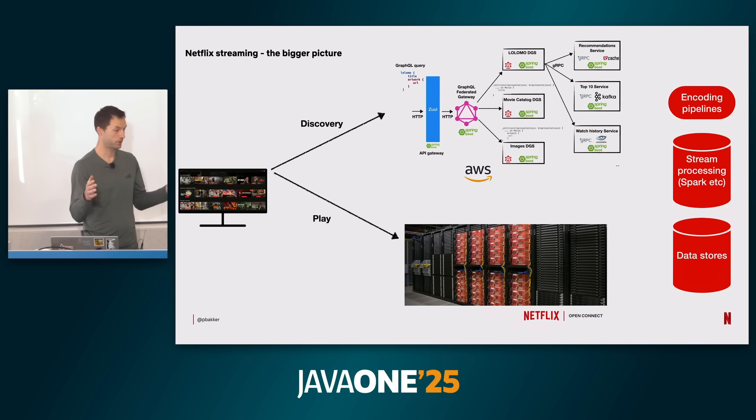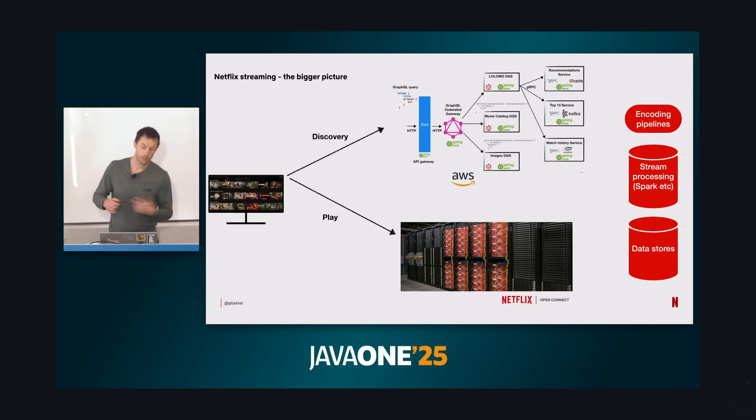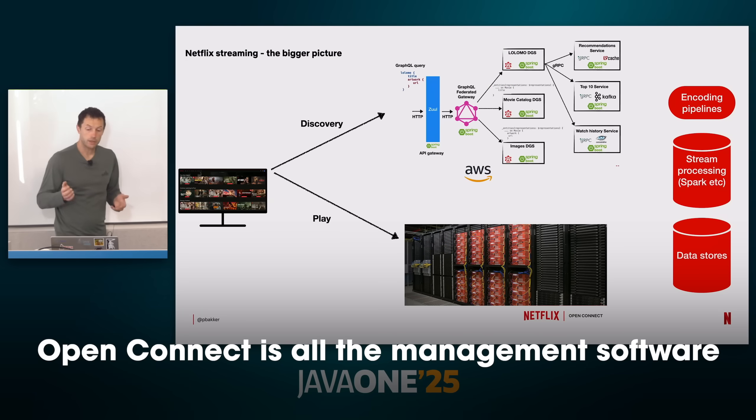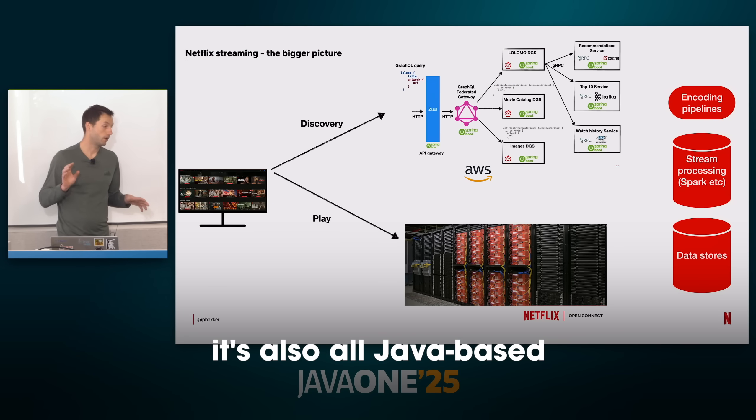Even their streaming hardware runs Java. When you hit play on a show, it doesn't stream from California — it streams from a Netflix server rack inside your local ISP. Netflix literally ships hard drives full of popular content to ISPs globally. That whole Open Connect system — all the management software around it — is also Java-based. So even the bits flying to your TV are Java-powered.